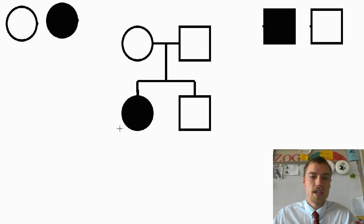Now when we have a shaded circle or a shaded square, that's going to be showing us that we have a person who is afflicted with a trait or has the trait or has the disease. So in this case they have two offspring. One of them is a female who has the disease and one of them is a male who does not.